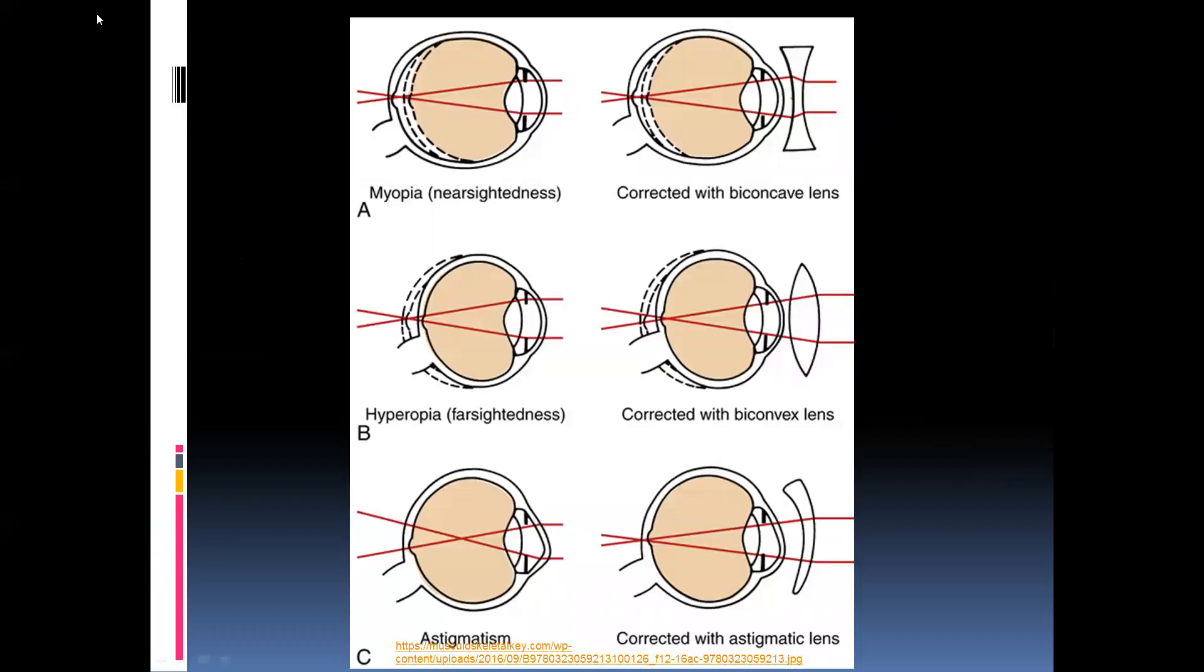To summarize, those people that are nearsighted can see near objects but can't see distant objects. The lens is too convex or remaining convex and not becoming less convex. To resolve that, we give them biconcave lenses that bend the light outwards, so the over-bending by the lens will still result in the image falling on the retina. For farsightedness, the lens is not becoming more convex. We need more bending of the light, so we use biconvex lenses which will bend the light before it reaches the cornea, and then the bending of the eye will be sufficient for it to land on the retina.